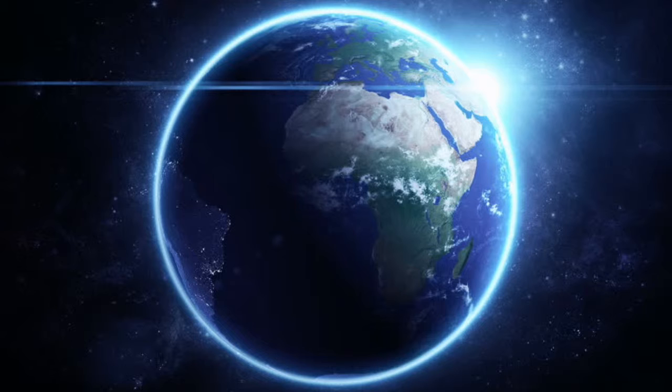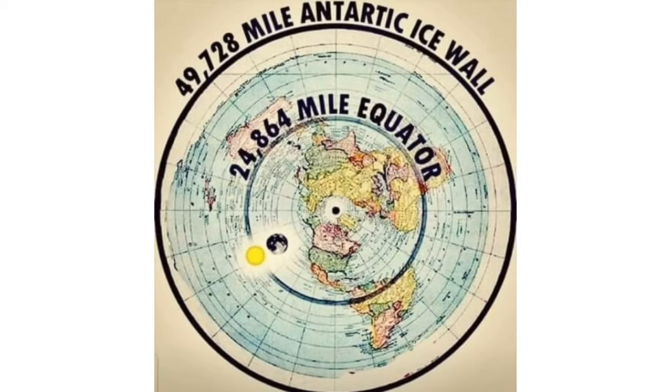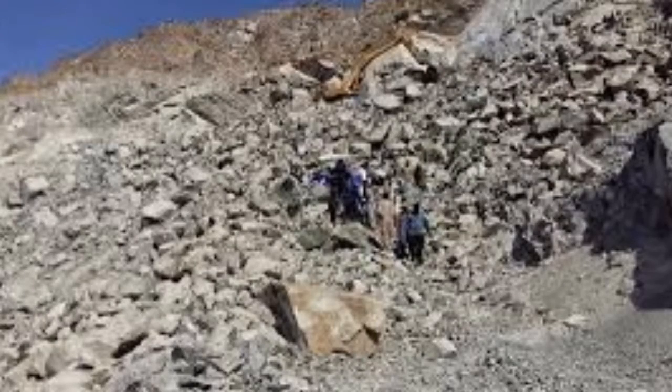If the Earth stopped spinning suddenly, the atmosphere would still be in motion with the Earth's original 1,100 mile per hour rotation speed at the equator. All of the land masses would be scoured clean of anything not attached to bedrock.